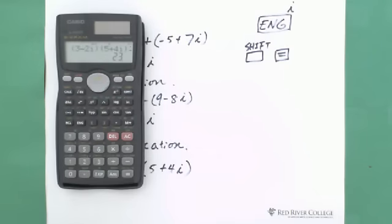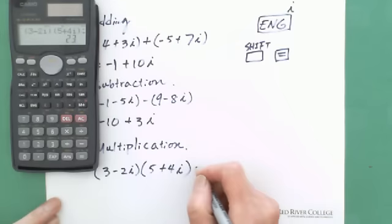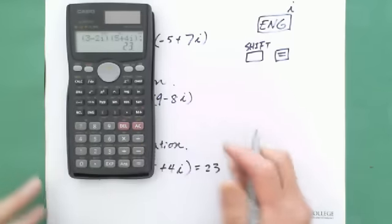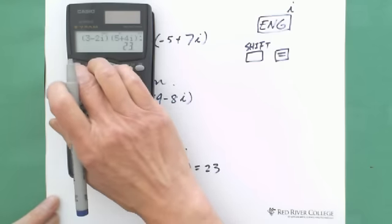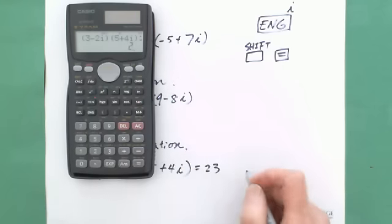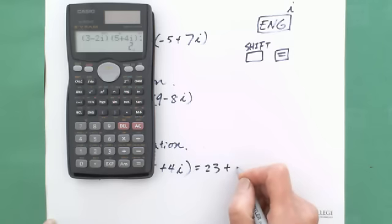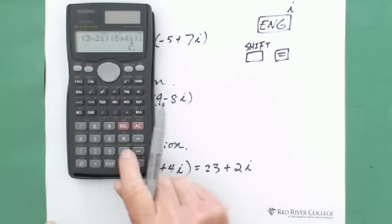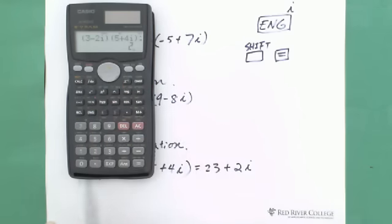Hit equal sign. It's 23, the real number portion. And shift equal gives you the complex number portion, 2i. Between two brackets, you can put a multiplication sign or you don't need to. Just put another bracket. The calculator already knows it is multiplication.